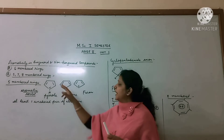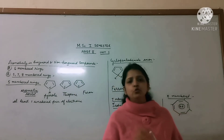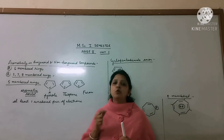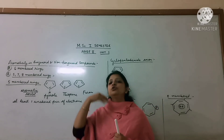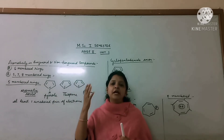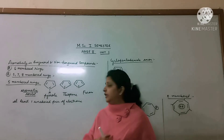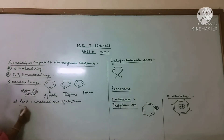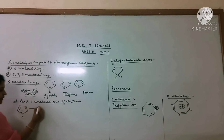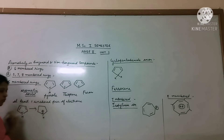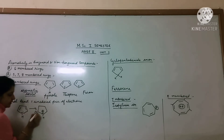When nitrogen donates its lone pair of electrons, nitrogen will have electron deficiency and will acquire a positive charge. And because the ring receives those electrons, the ring will have a negative charge. We can see this delocalization. Let's look at the pyrrole example. When the lone pair of electrons runs in the ring, nitrogen will have a positive charge and the ring will have a negative charge.